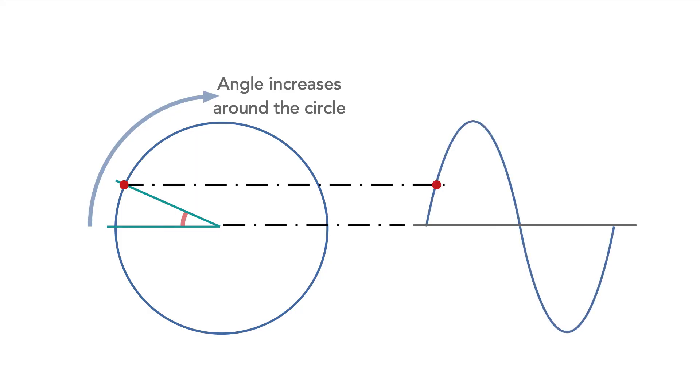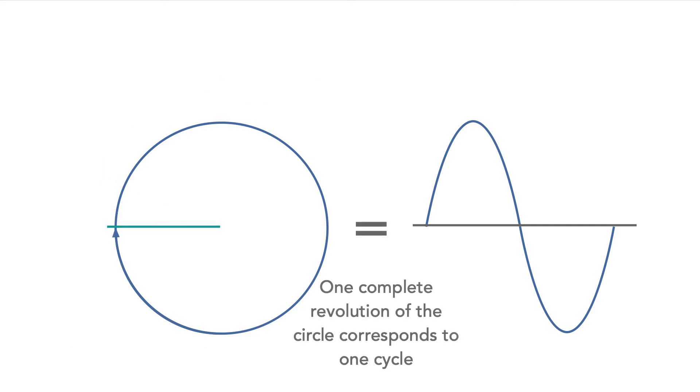Sine is normally associated with angles. We can imagine a sine wave as a point moving around a circle, and the value above or below the horizontal axis being the instantaneous amplitude. The angle of the point between the horizontal axis and the line drawn from the center to the point itself is the angle for which we take the sine. This means that a complete movement around the circle corresponds to one cycle.